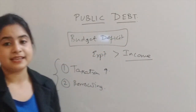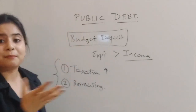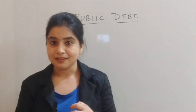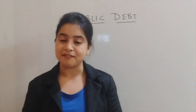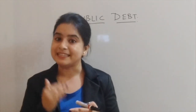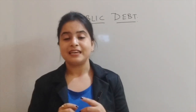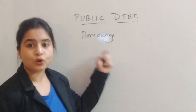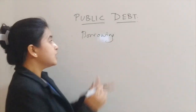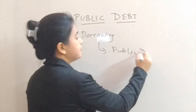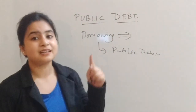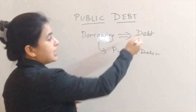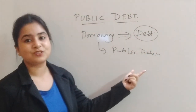The question arises: how does public debt come into the picture? When the government borrows money from any source, there is a condition where the government is indebted to someone. That condition is known as public debt. So borrowing ultimately leads to public debt, because this borrowing makes the government indebted to someone. Since the government is the one who is debted, that is why it is known as public debt.